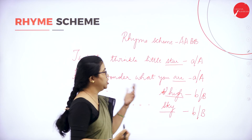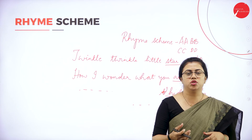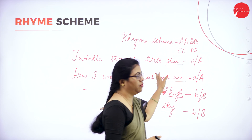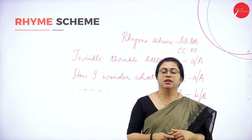As the stanza continues, you can continue with the names like CCDD, and so on. This is called the rhyme scheme. There are many names given to it like Iambic Pentameter and others, but you need not worry too much about those. If you can mark the rhyme scheme, that is enough. When you know the rhyme scheme, adding a tune to the poem will be very easy — the poem will have a rhythm.